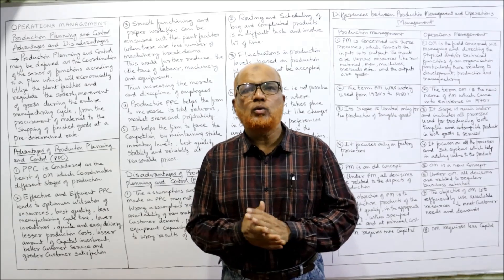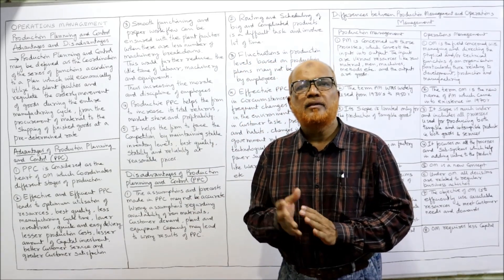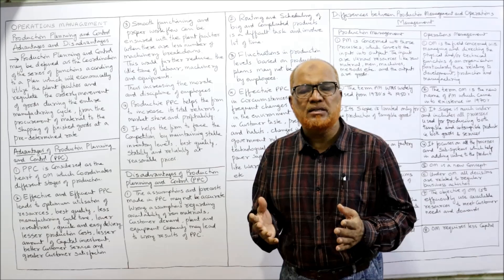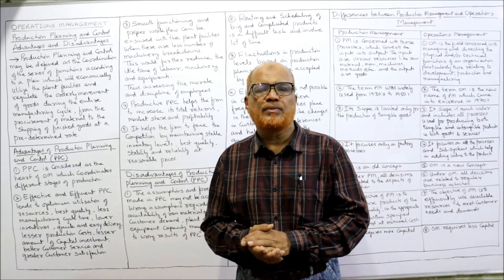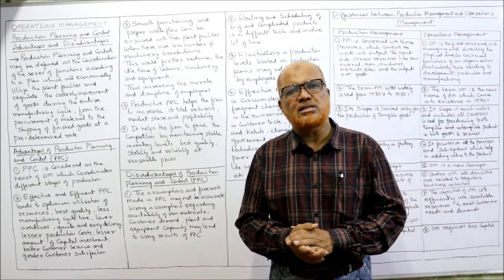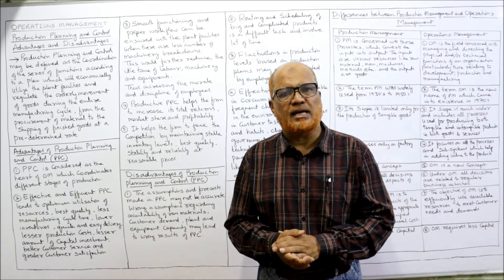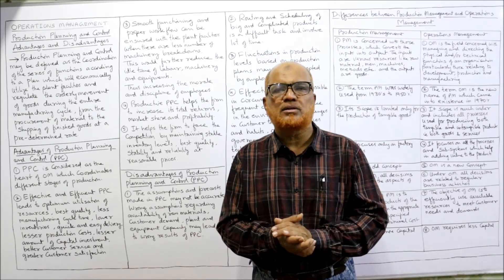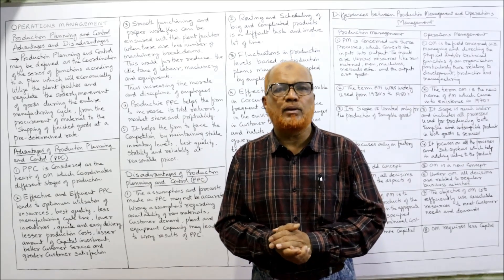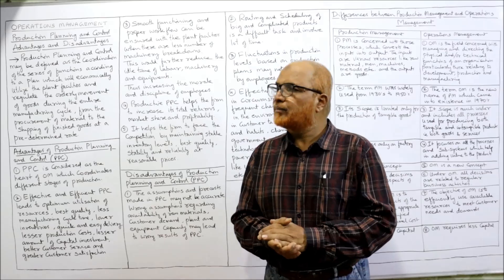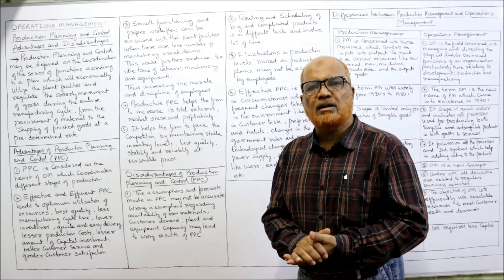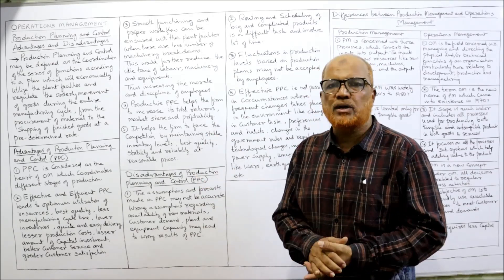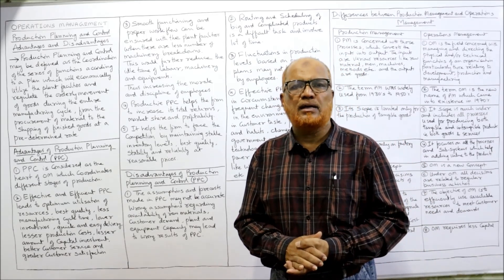In operations management, remember it is 50% theory and 50% problems, so you must not ignore the theoretical part. I have already uploaded two videos on operations management theory. If you have not watched the earlier videos, I suggest you go to the playlist of my channel, select the subject operations management, and watch the theory videos. In this video I have selected only two topics: advantages and disadvantages of production planning and control, and the differences. Take a screenshot of the points I have written on the board, then I'll explain all the points in detail.